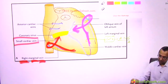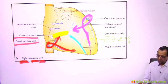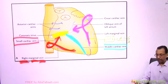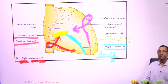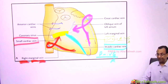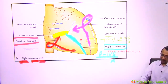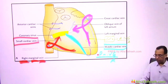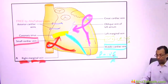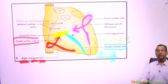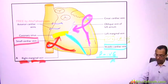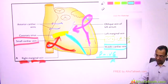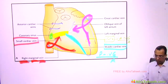The middle cardiac vein runs in the PIVG (posterior interventricular groove) along with the PIVA (posterior interventricular artery), posteriorly. The middle cardiac vein drains into the coronary sinus, which in turn drains into the posterior wall of the right atrium.